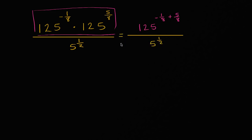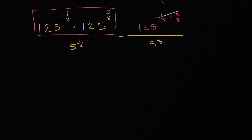These are equivalent. All I did is add the exponents — these two exponents — because I had the same base and we were taking the product of both 125 to the negative 1/8 and 125 to the 5/8. And so negative 1/8 plus 5/8, well that is 1/2. So this right over here is 125 to the 1/2 over 5 to the 1/2.